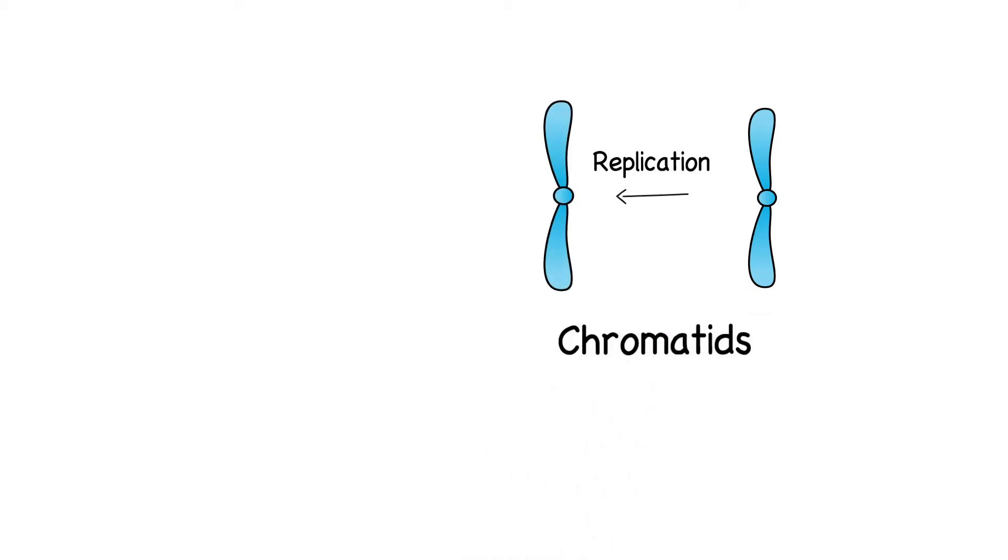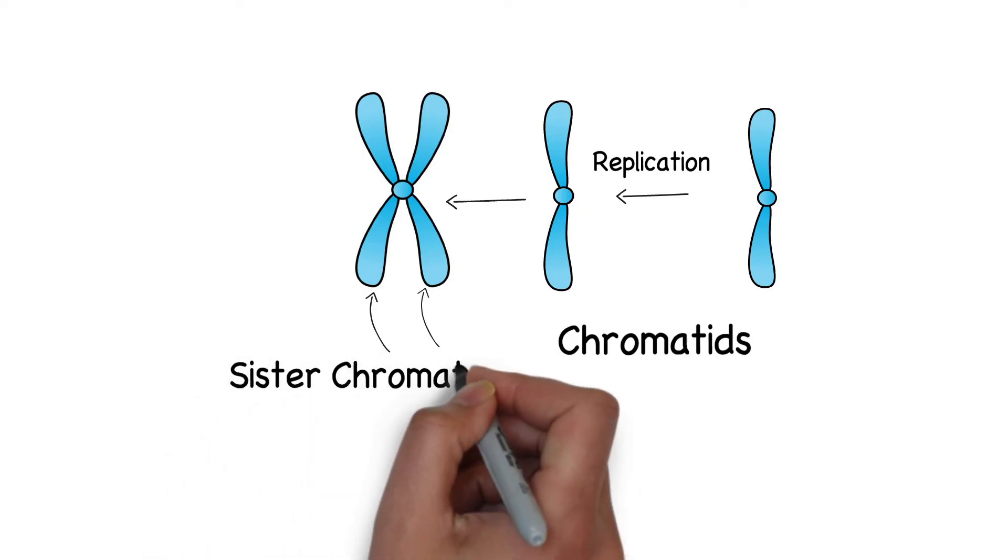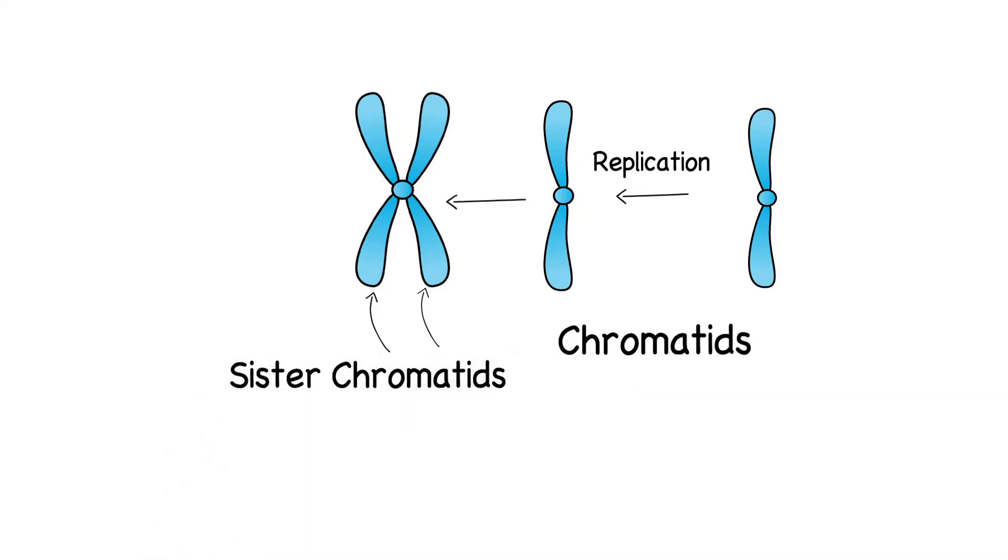The chromosome and its copy are then joined at the center to form the X-shaped structure, called the chromosome, and these two are now called sister chromatids.